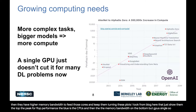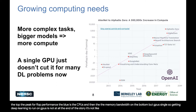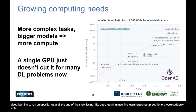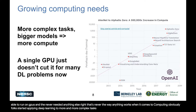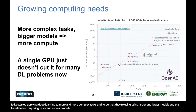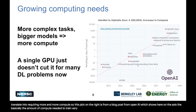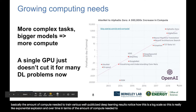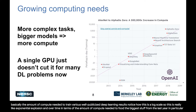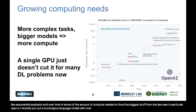Getting deep learning to run on GPUs is not the end of the story. Folks started applying deep learning to more and more complex tasks using larger and larger models, requiring more and more compute. A plot from an OpenAI blog post shows the amount of compute needed to train various well-publicized deep learning results — on a log scale, showing exponential growth over time. This doesn't even include the biggest recent work; OpenAI put out a language model with over 100 billion parameters, which is just insane.